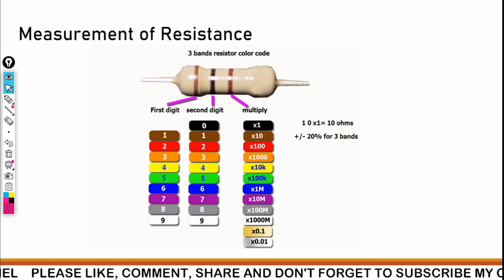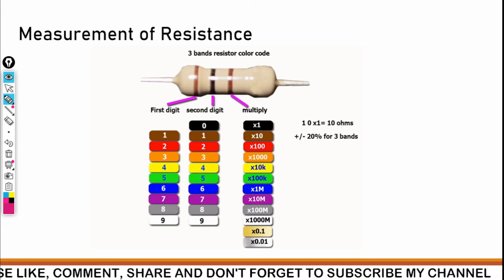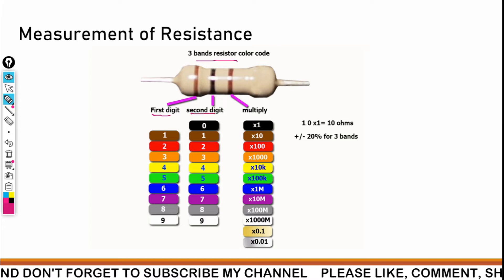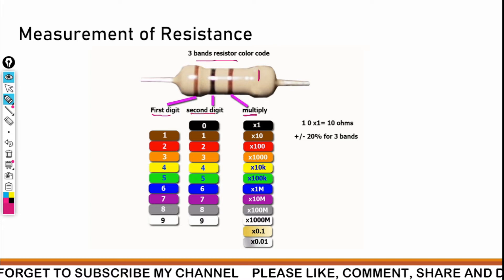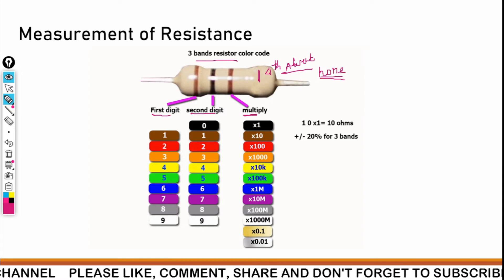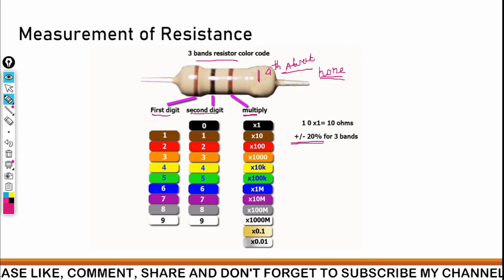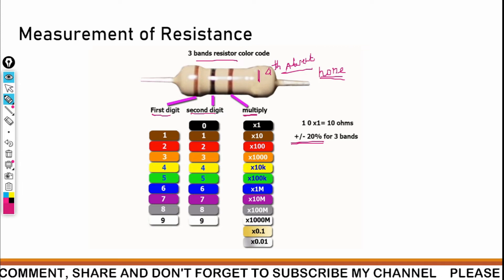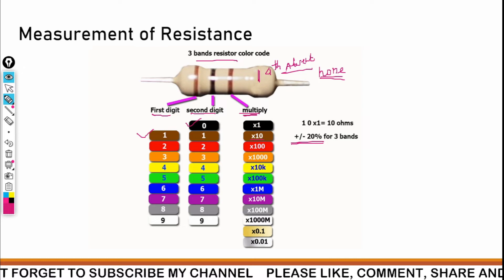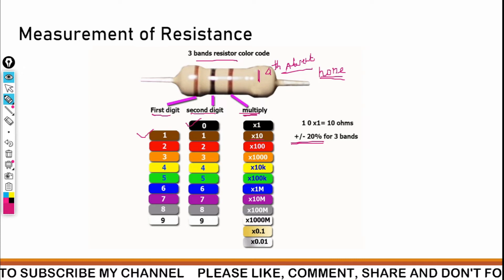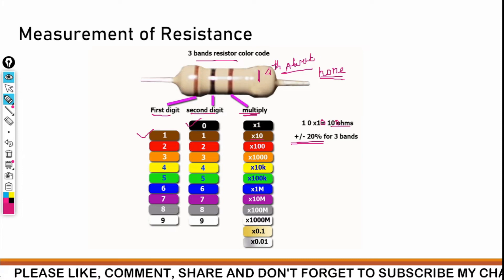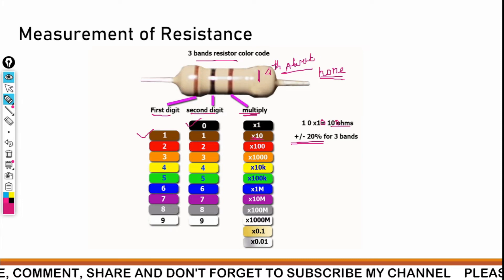For a three-band color code resistor, the first color indicates the first digit, the second color the second digit, and the third color is the multiplier — the fourth band is absent, so it is considered as no color or none, giving plus or minus 20 percent tolerance. Here the first color is brown — that is 1 — second is black — that is 0 — and third is brown, so multiplied by 10. So 10 multiplied by 10 becomes 100 ohm.